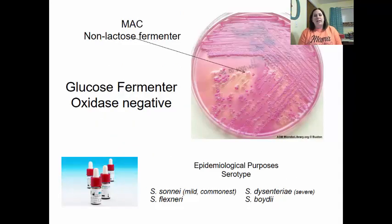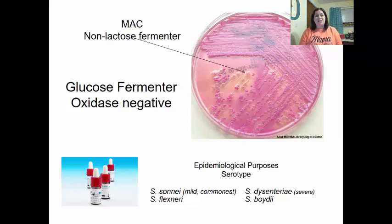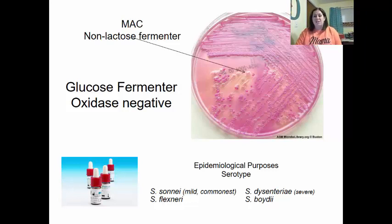Using MacConkey agar, Shigella shows as a non-lactose fermenter, confirming it is gram-negative since MacConkey does not allow gram-positives to grow. It does ferment glucose, not lactose. Different serotypes are identified using rectal swabs with various reagents for epidemiological purposes. Shigella sonnei is the most common and mildest form. Shigella flexneri and S. dysenteriae is the most severe form. Shigella boydii is also included.